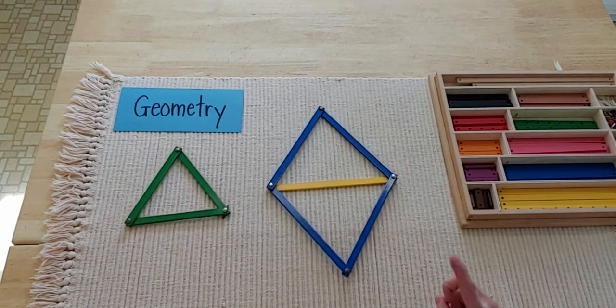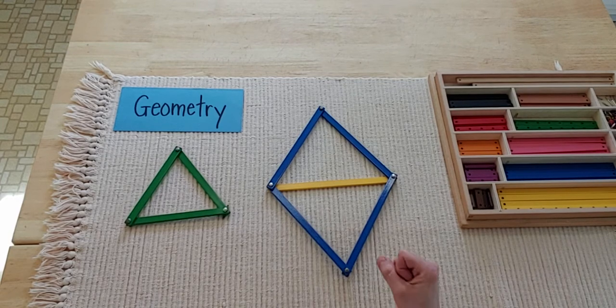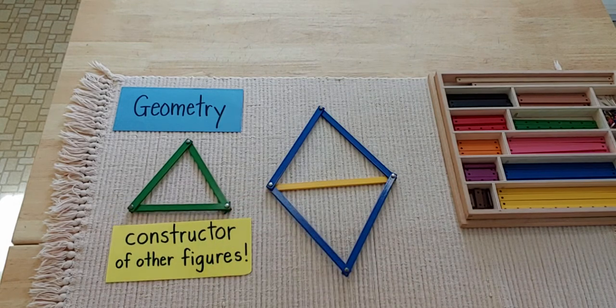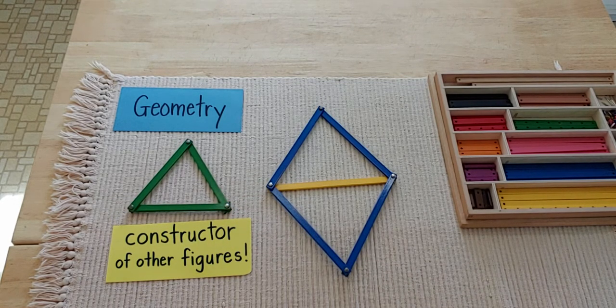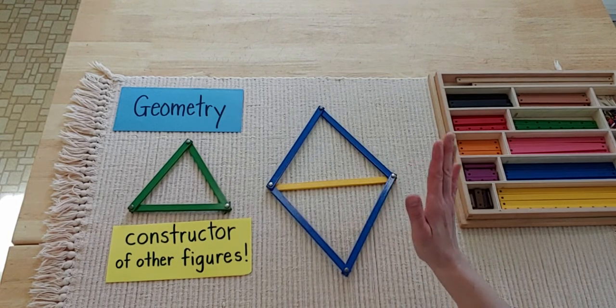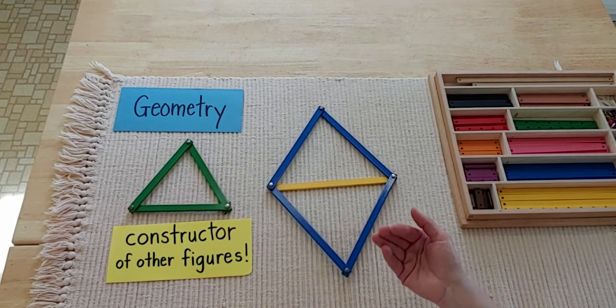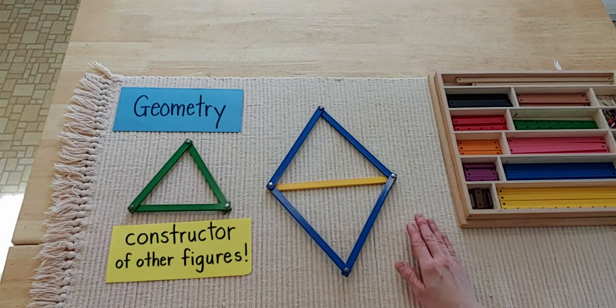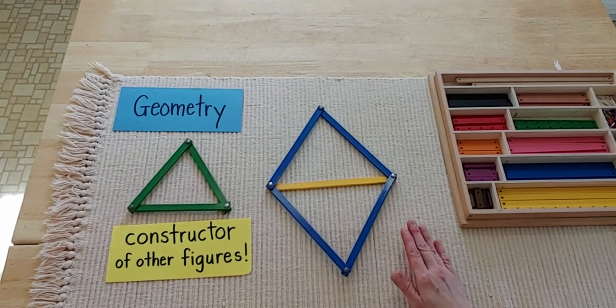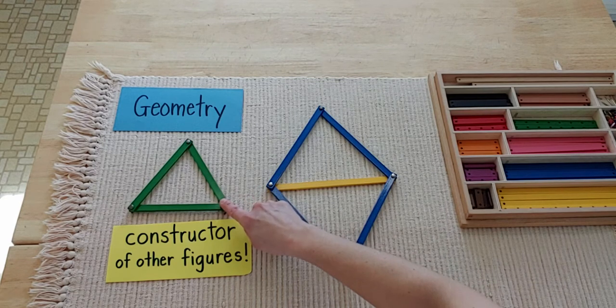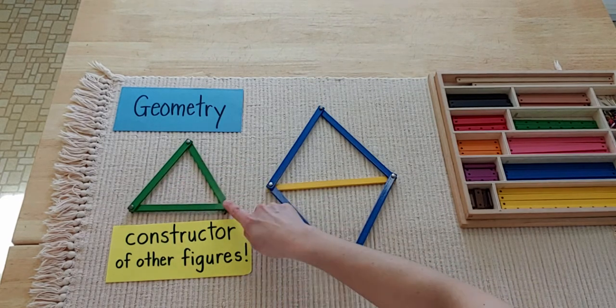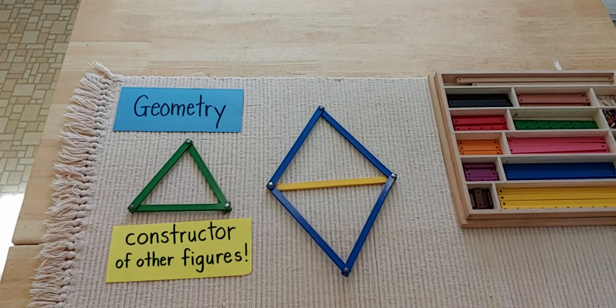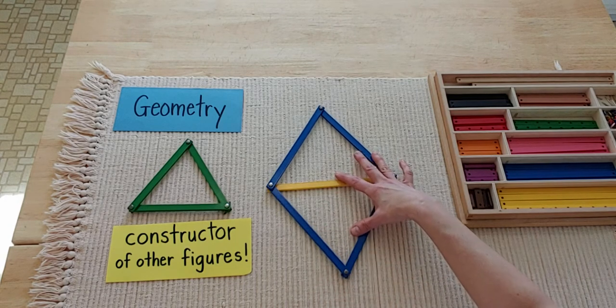And what does that tell me? Well, it tells me this. Triangles are so strong and so steady. They are known as the constructor of other figures. Now, my square was very important too. There's things like square roots and square inches and we use those for measuring. Those are very important too. I don't want you to think that the square is not very important. But I just want you to notice that this triangle, even though it has less sides than my square did, it is so strong. It is a constructor of other figures. It helps them become strong.